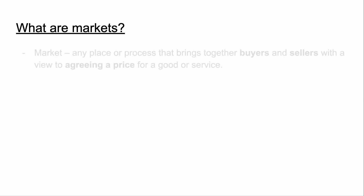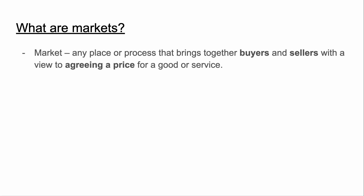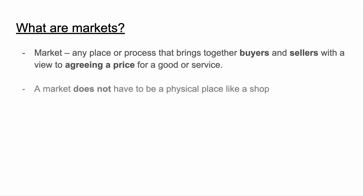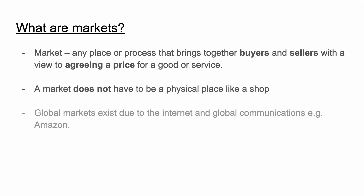So what are markets? Well, a market is a place that brings together buyers and sellers with a view to agreeing a price for a good or a service. A market does not have to be a physical place like a shop, because global markets exist due to the internet and global communications. An example of a global market is something like Amazon.